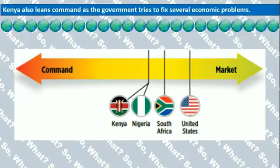Kenya is also considered mostly unfree, also leaning command. The government confiscates land and property that is not benefiting the economy. The government has many economic problems including poor national budgeting, over-reliance on trade, and illegal child labor practices within the country.